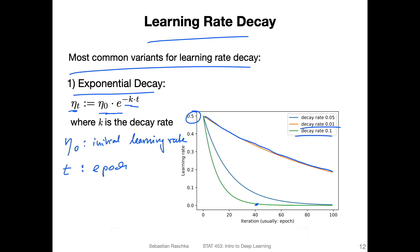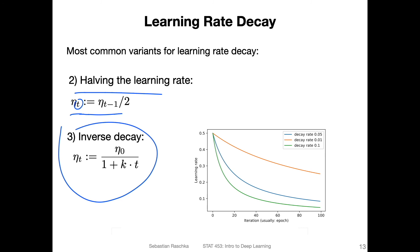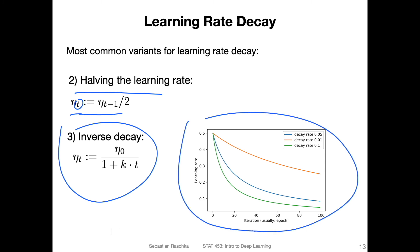Another common variant for learning rate decay — and one that I use most often in practice — is halving the learning rate: you basically halve the learning rate after each step t, which could be each epoch or each 10th epoch. There is also an inverse decay, which is essentially similar to exponential decay but computed slightly differently. I'm plotting this here for reference; it's very similar to exponential decay.